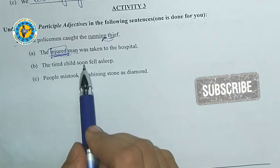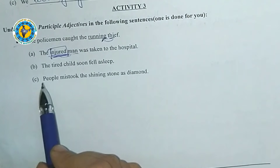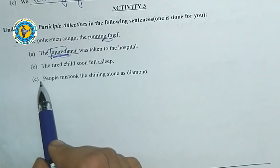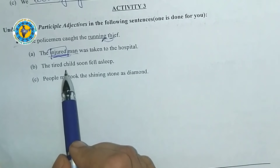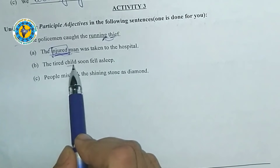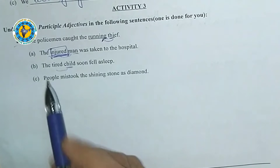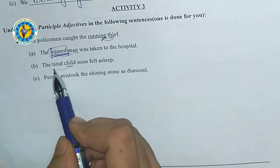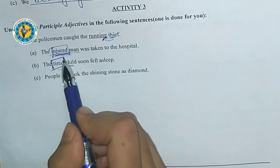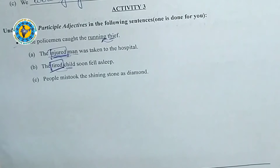Next sentence: 'The tired child soon fell asleep.' Here, 'tired' is the participle adjective. It describes the child — the child was tired. 'Tired' is the word that modifies the noun 'child.'